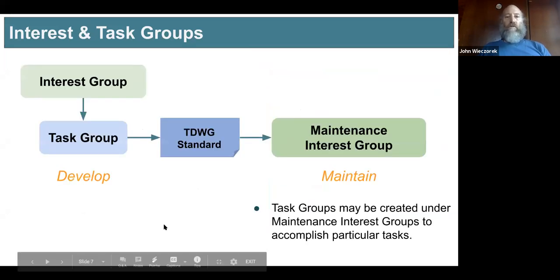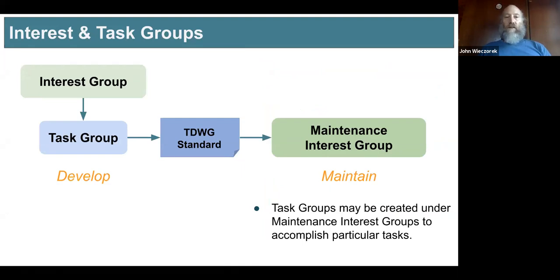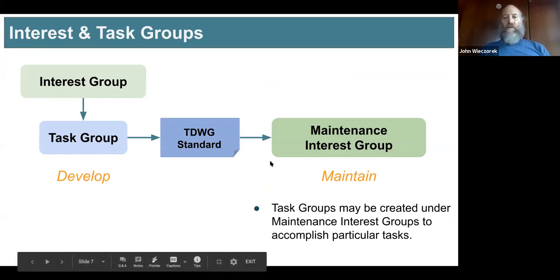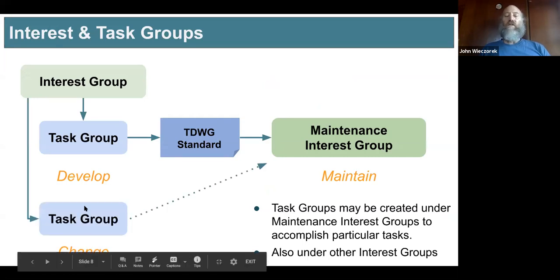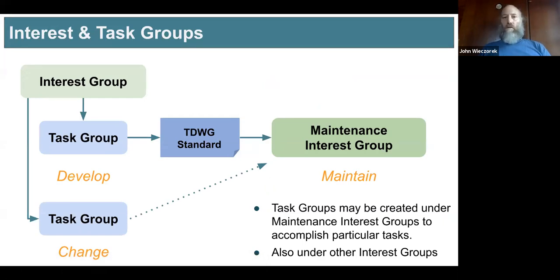So an interest group creates task groups — this could be any interest group. The task groups develop things, in this case a standard. And then after that's done, the maintenance interest group is created to keep it going and keep it vibrant and alive and relevant. Once that maintenance interest group is created, because it's an interest group like others, it can also spawn task groups to do things to maintain the standard. So one of those could be to execute changes called upon by the community.